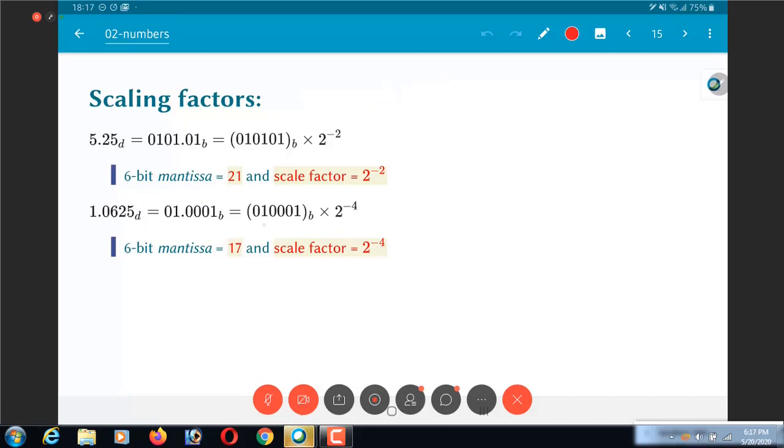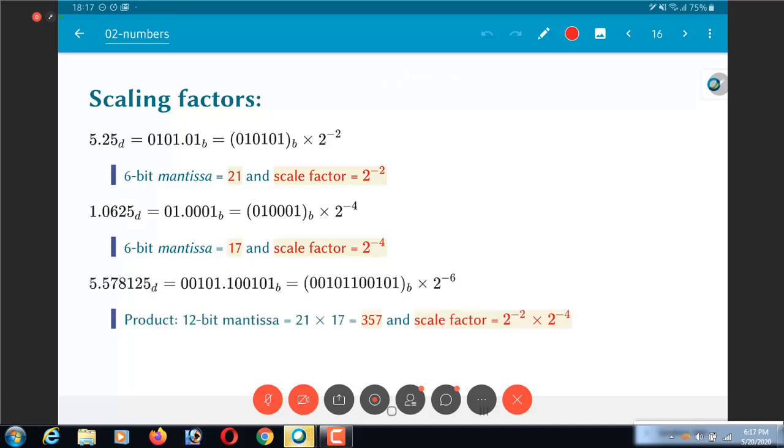What about the other value, 1.0625? This has the value 010001, that is 17, with a scale factor of 2⁻⁴. Okay. Multiply the two together, what do you get? It is this long number 5.578125, which is basically 21 times 17. You multiply the 6 bit and 6 bit mantissa and get a 12 bit mantissa as the result. And the scale factor is 2⁻² times 2⁻⁴ becomes 2⁻⁶.